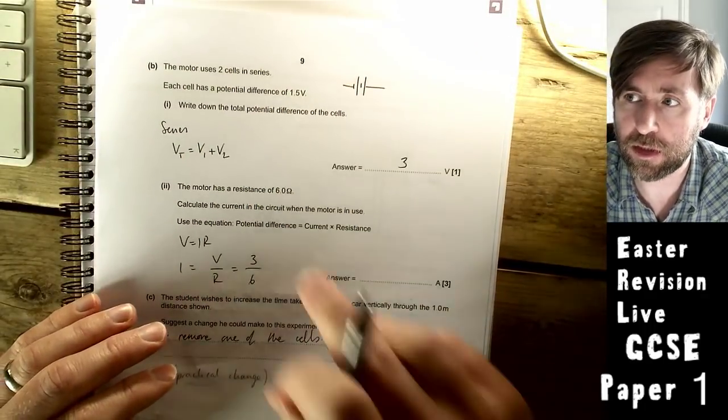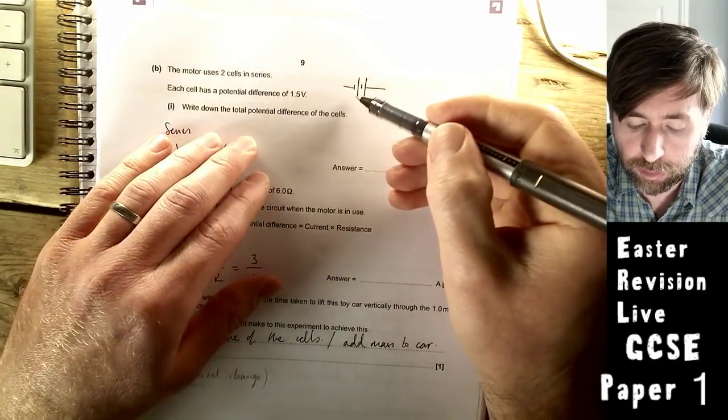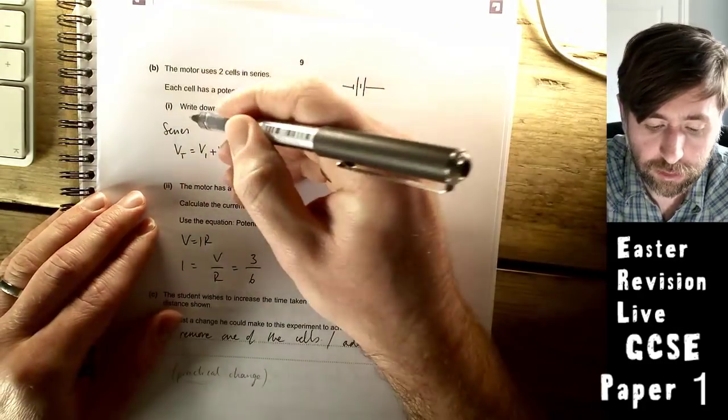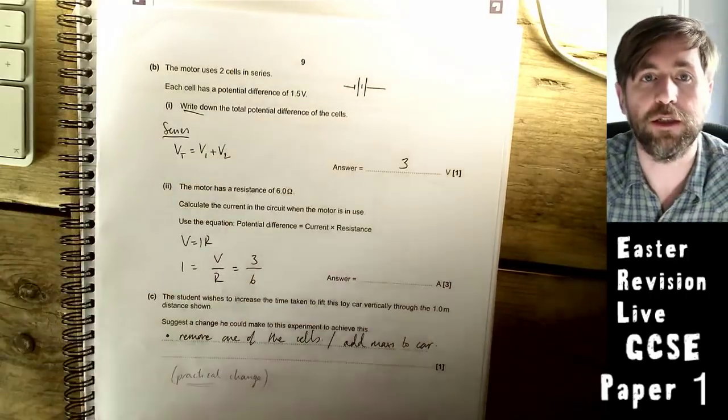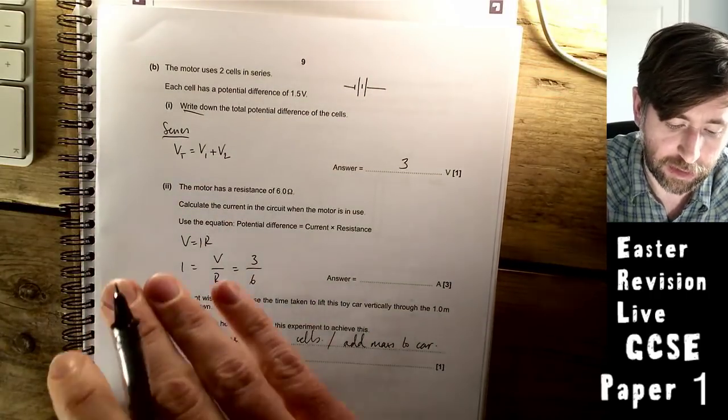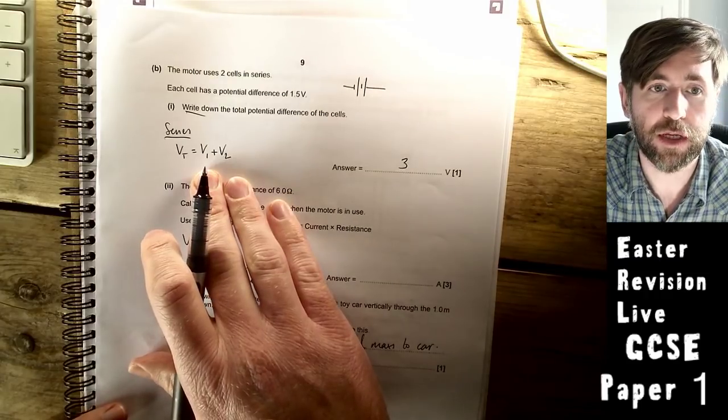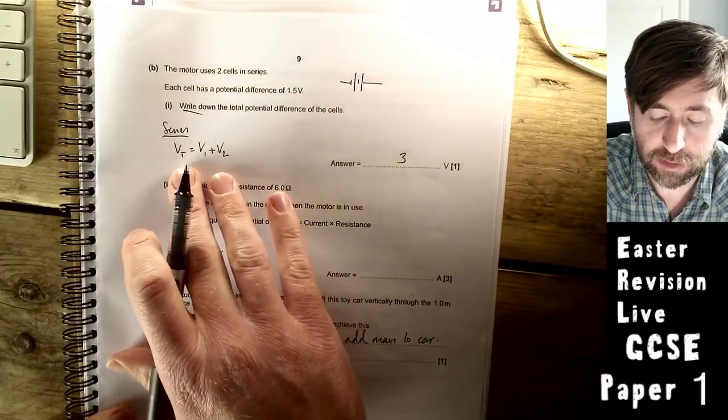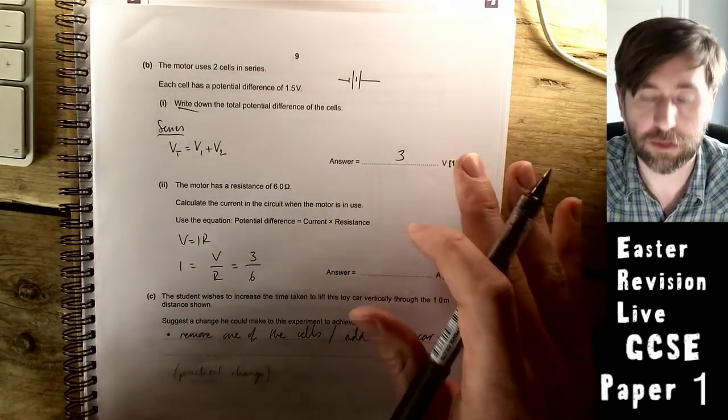The motor uses two cells in series. Each cell has a potential difference of 1.5 volts. This is the setup, two cells in series. Write down the total potential difference. Potential difference is summed in series. If you take the one potential difference and add it to the other, you get the total potential difference. So this is three volts.